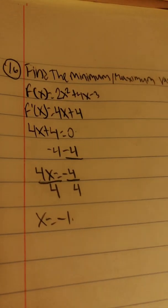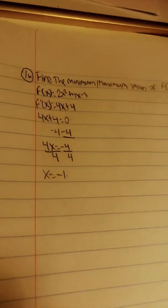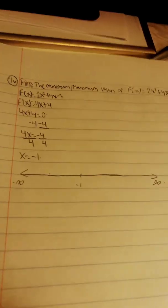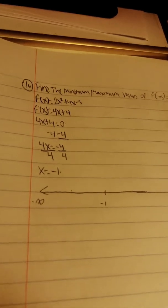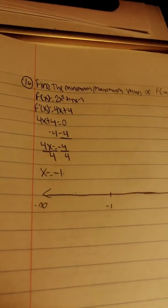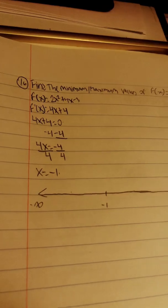Now draw a number line going from negative infinity to negative 1, and negative 1 to infinity. Now choose any number from negative infinity to negative 1, and test it for the derivative to test whether it's positive or negative.